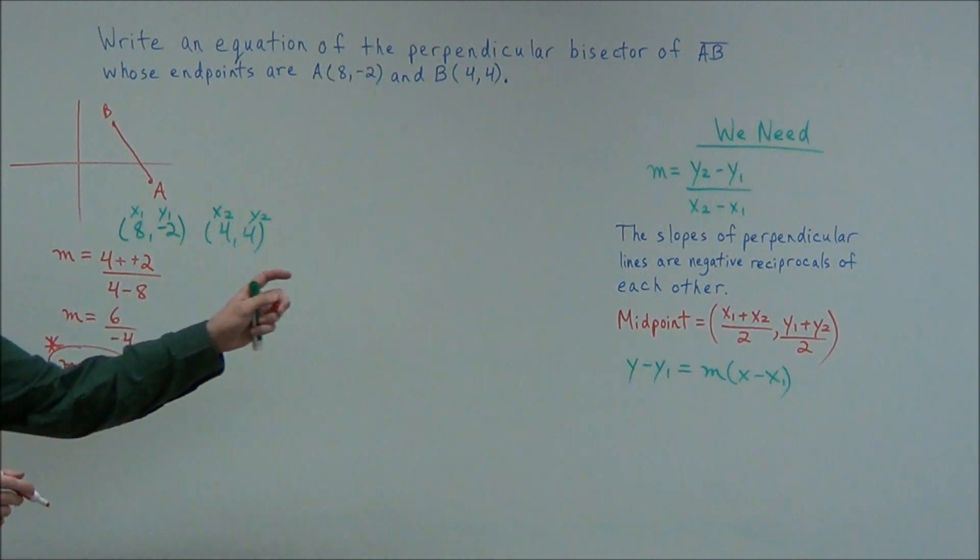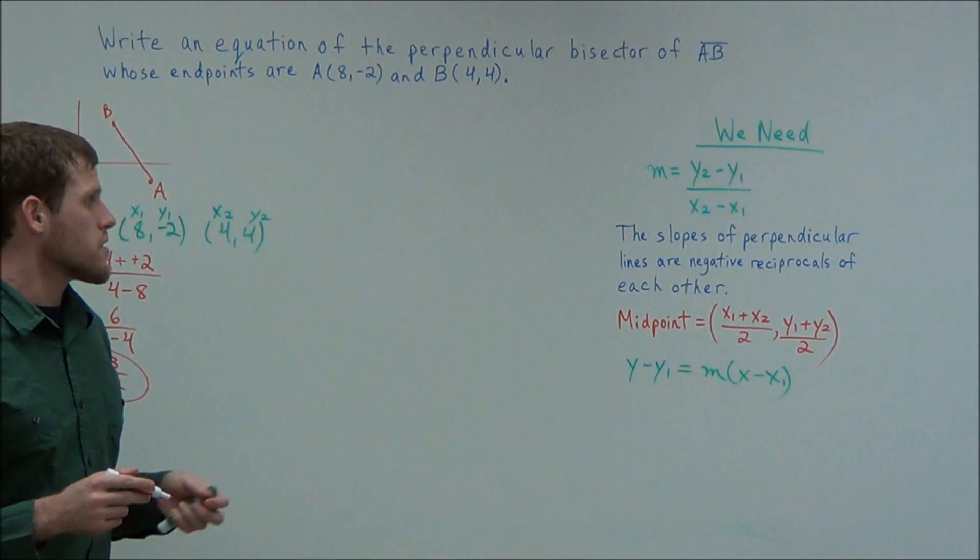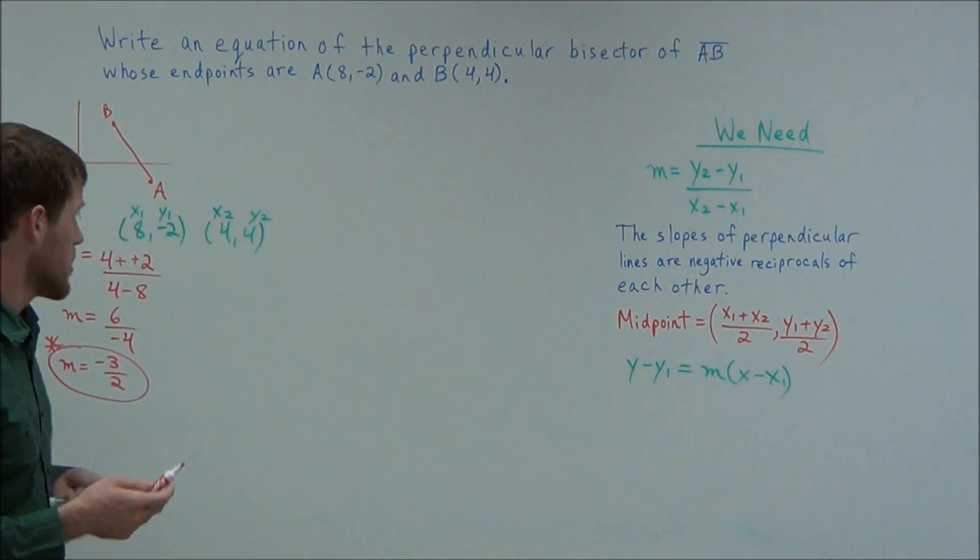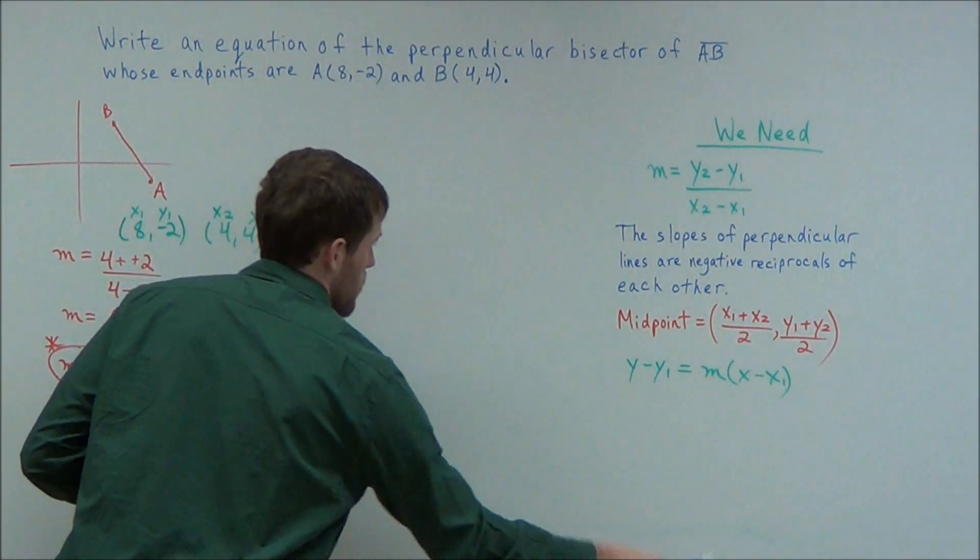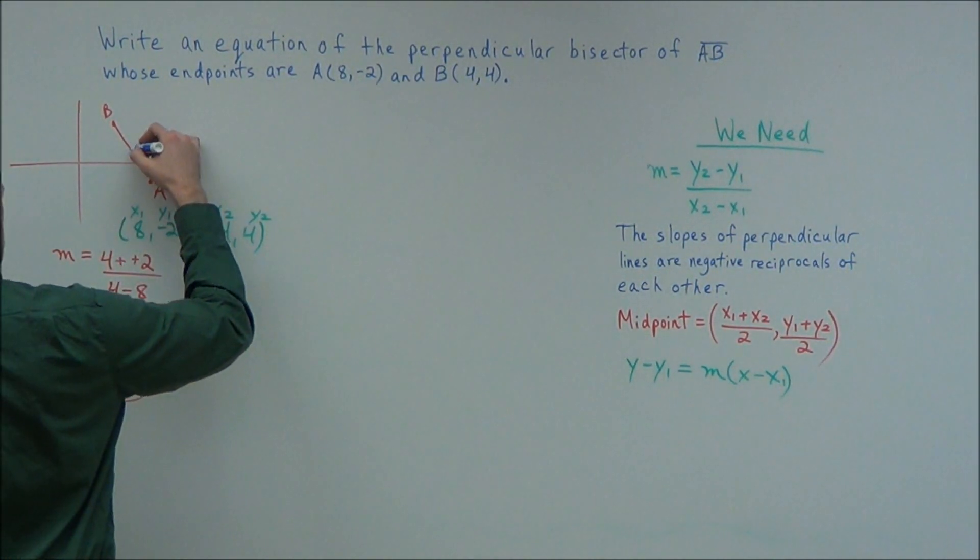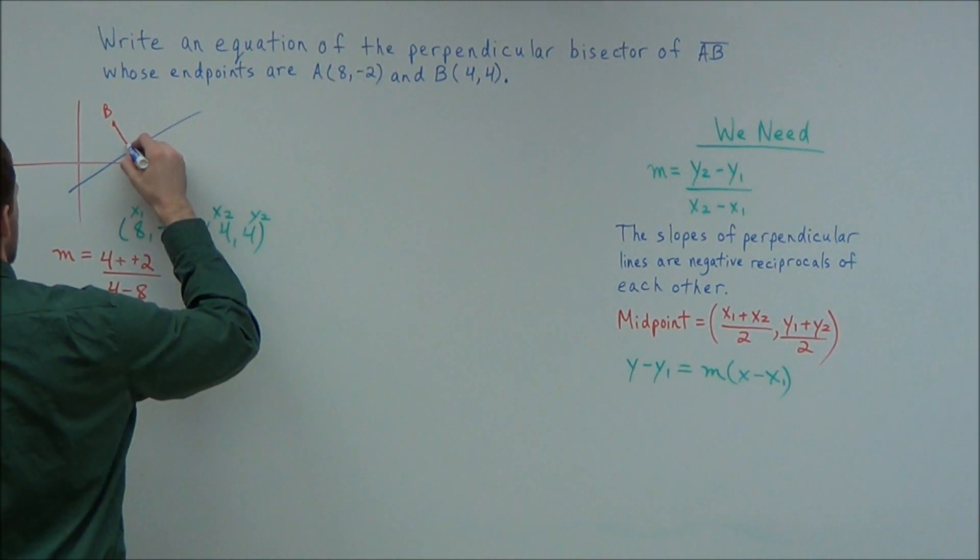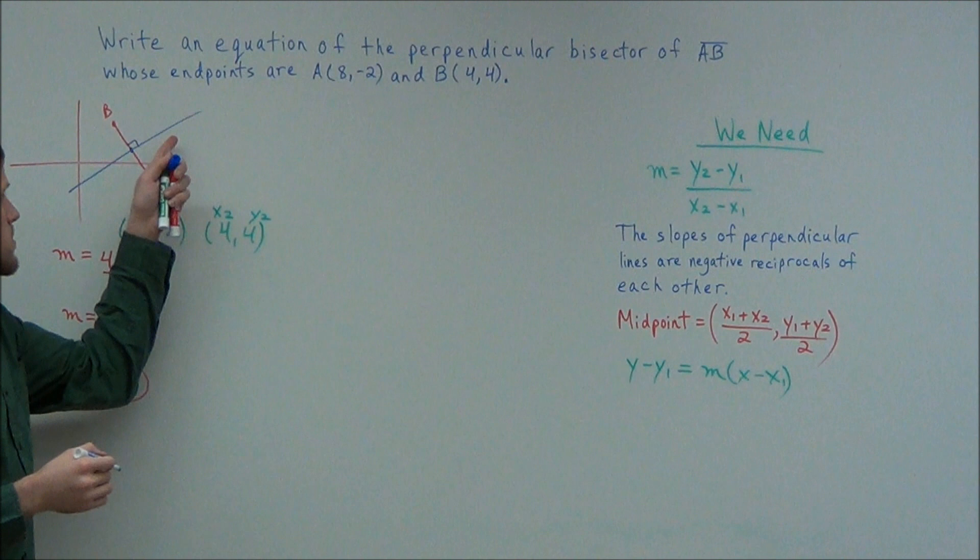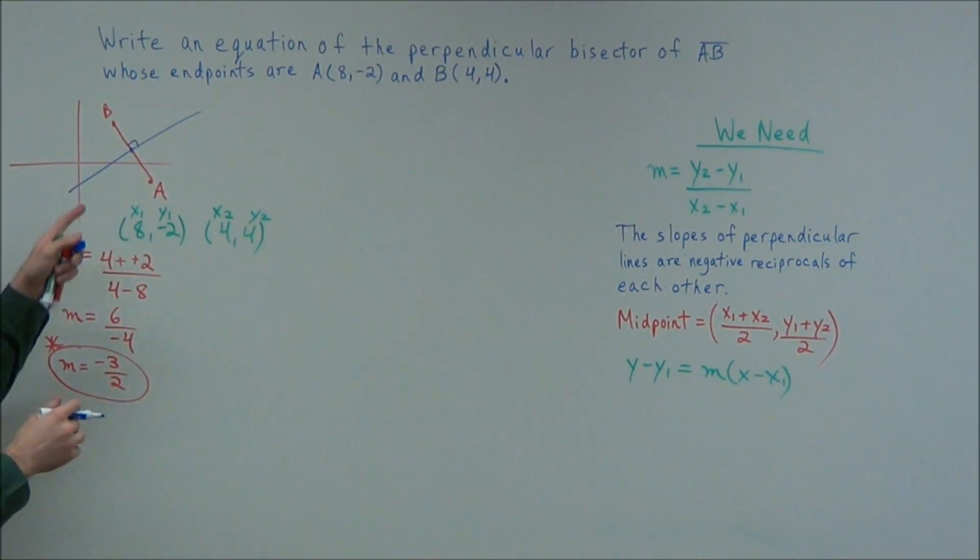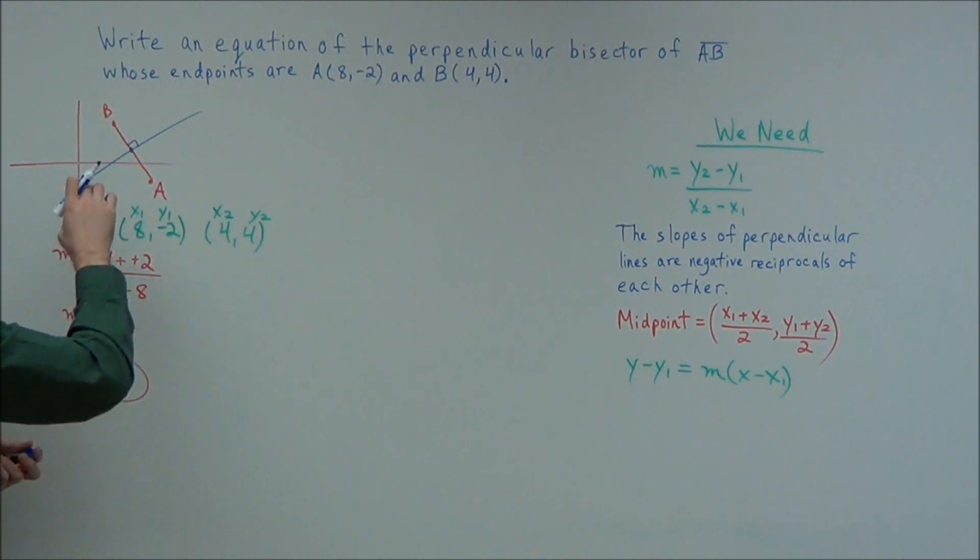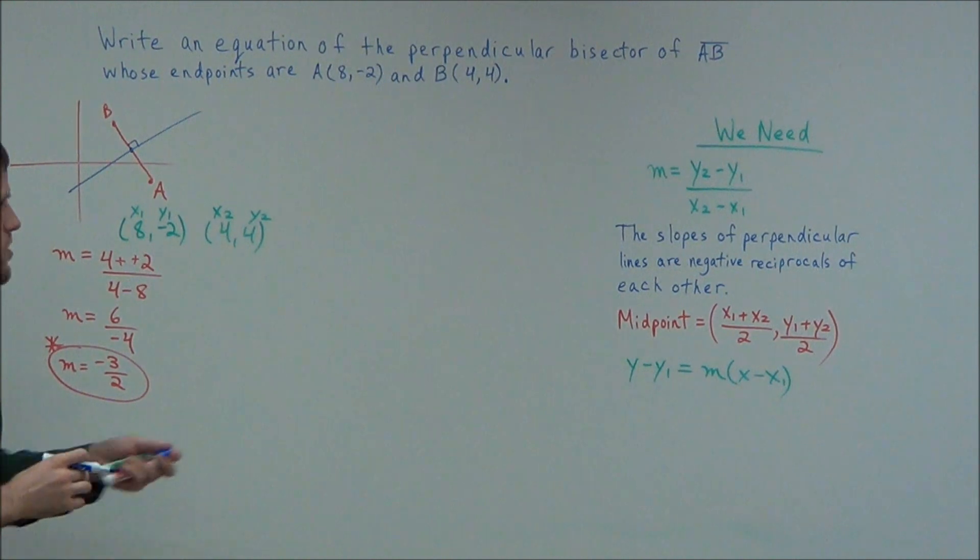But now what we need to do next is consider the fact that the slopes of perpendicular lines are negative reciprocals of each other. So when we construct, or when we look at our next line, our perpendicular bisector is going to slice the original line in half and form a 90 degree angle. So by definition, a perpendicular bisector cuts a line in half at 90 degrees.